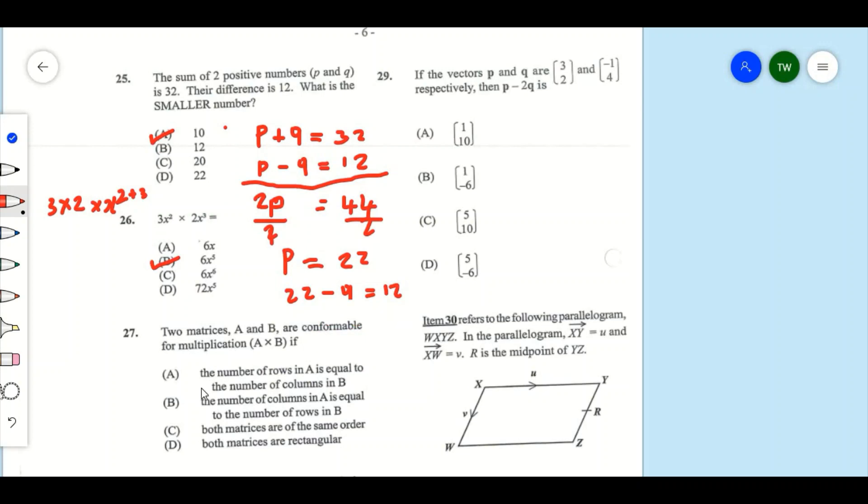Question 27: Two matrices A and B are conformable for multiplication A times B. The number of rows in A is equal to the number of columns in B. And that's going to be our answer there. Because the number of rows in A has to equal to the number of columns in B for both matrices to be able to multiply.